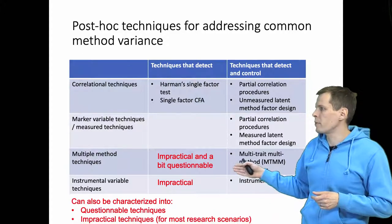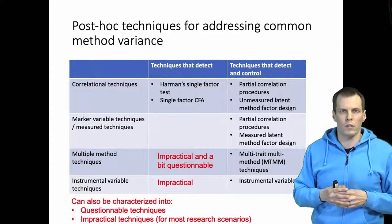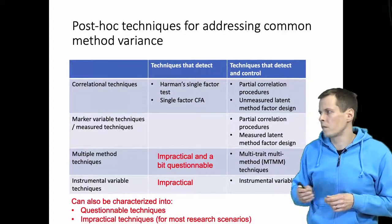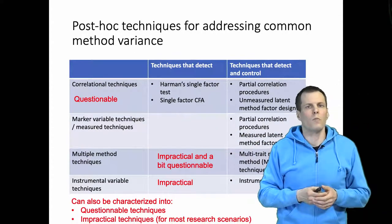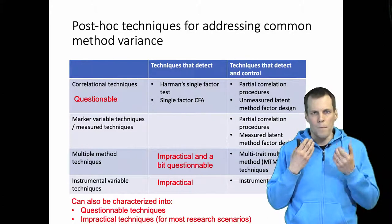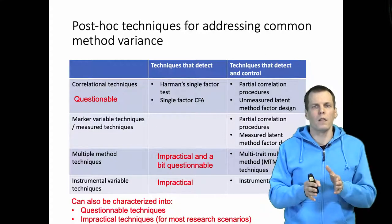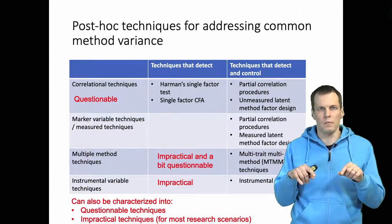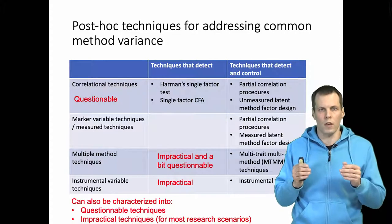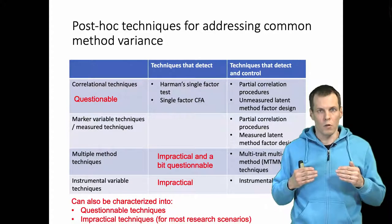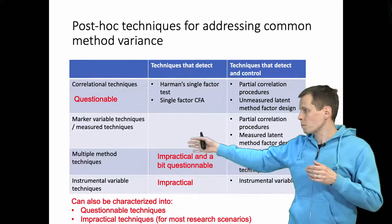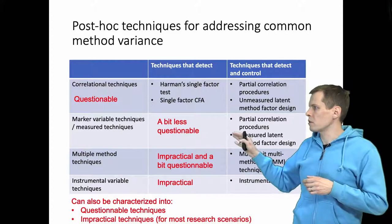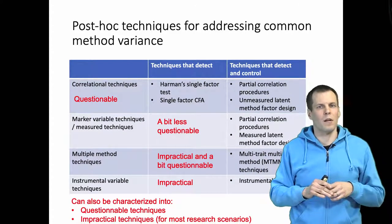We also have impractical and somewhat questionable multiple method techniques — impractical to call all informants or to establish multiple methods — and these techniques also make assumptions that are sometimes difficult to justify. Then we have correlational techniques, which are very questionable. The bottom line is that these models are very seldom identified, because you simply cannot check whether the correlation between two items is because they measure correlated constructs or whether that correlation is due to the measurement procedure. From a cross-section with no markers or no measured sources of method variance, you simply cannot identify the source of correlation.